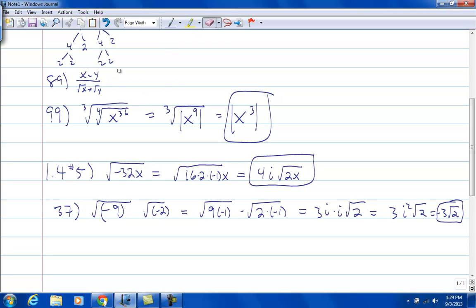So to rationalize that, we multiply by the conjugate of the denominator. That's square root of x minus the square root of y over square root of x minus square root of y. So we're multiplying by 1.